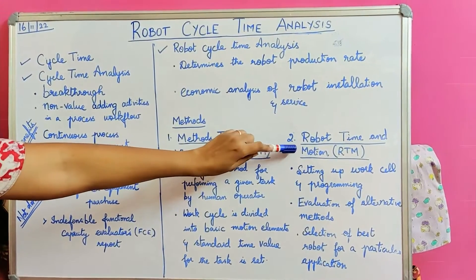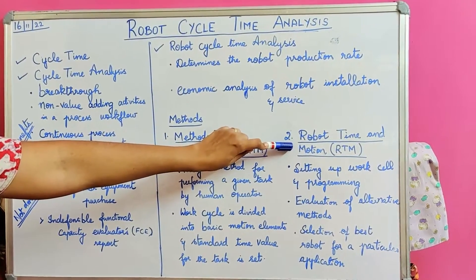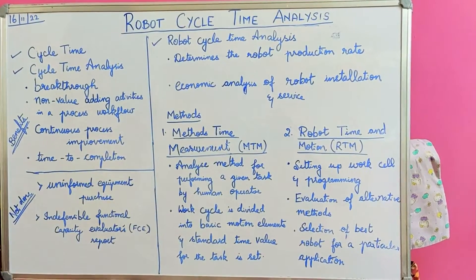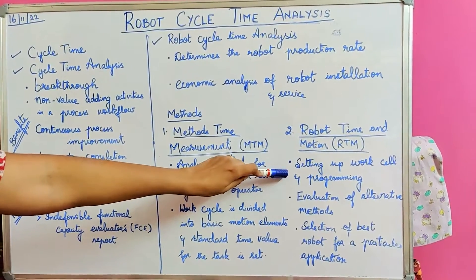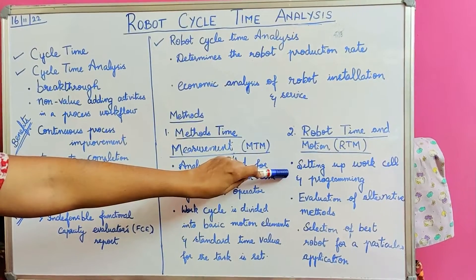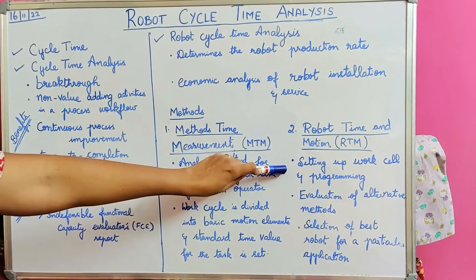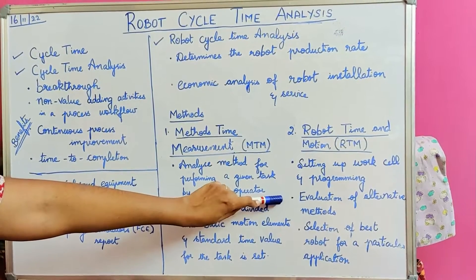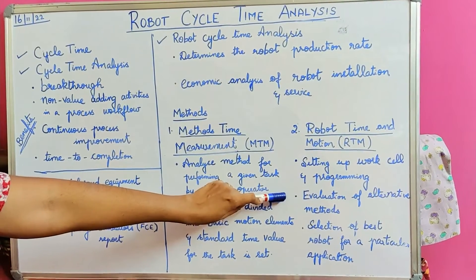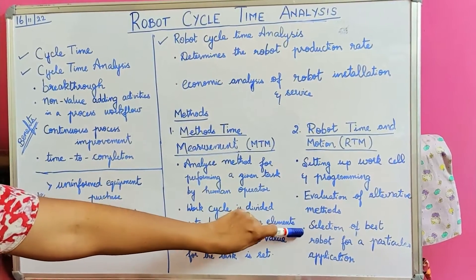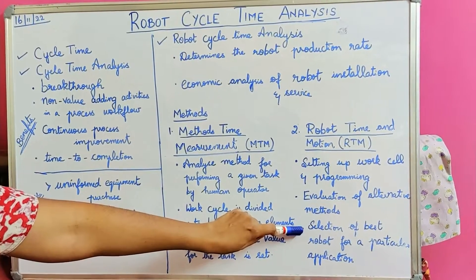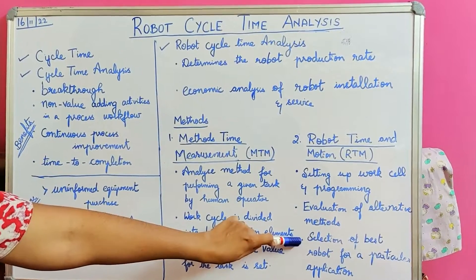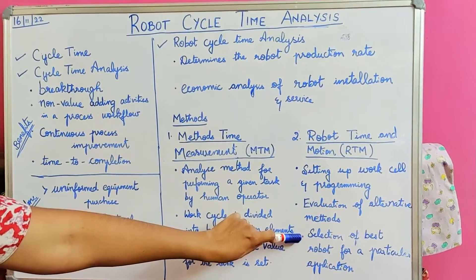The second method is Robot Time and Motion, RTM. It estimates the time needed to perform a work cycle before setting up a work cell and programming the robot. It enables evaluation of alternative methods of performing robot tasks, and is used as a guide in selection of the best robot for a particular application by comparing performance for a given work cycle.